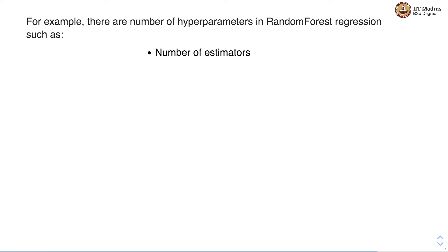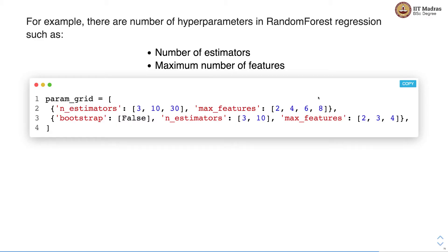Let us take a concrete example of performing hyperparameter search in a random forest regression problem. There are a number of hyperparameters in random forest regression, such as number of estimators and maximum number of features. We specify the combinations of parameters to try in the form of a parameter grid. In this case, we specify number of estimators to try as a list of three numbers: 3, 10 and 30. And maximum features that we want to try is 2, 4, 6 and 8. We also specify the value of bootstrap to be false and the number of estimators to be 3 and 10, and maximum features to be 2, 3 and 4.